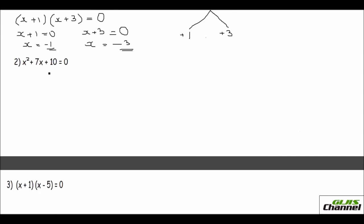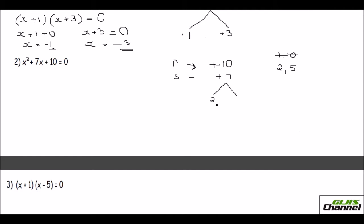The second example is x squared plus 7x plus 10 equals 0. The product should give you plus 10 and the sum should give you plus 7. The possibilities for factors of 10 are 1 times 10 or 2 times 5. Since 1 and 10 don't add up to 7, that's ruled out. But 2 and 5 add up to 7, so the numbers are plus 2 and plus 5. The factors are x plus 2 and x plus 5.